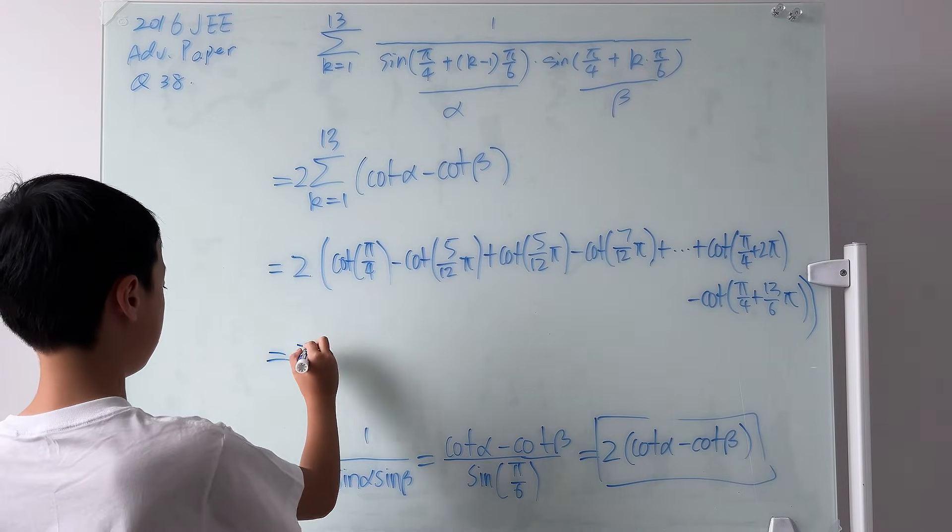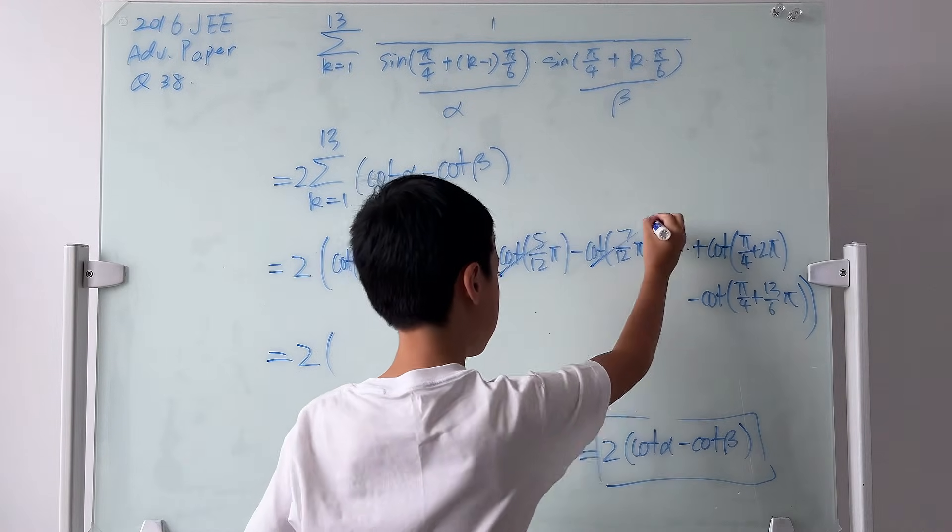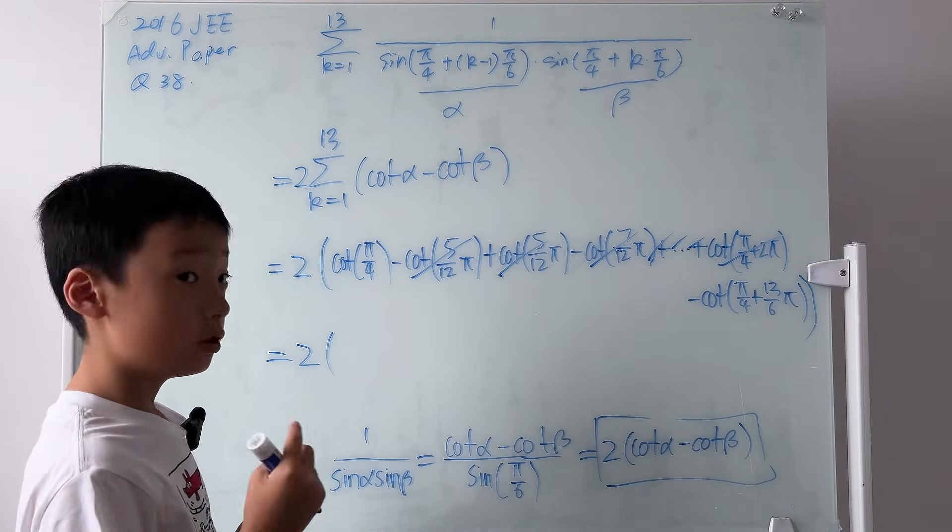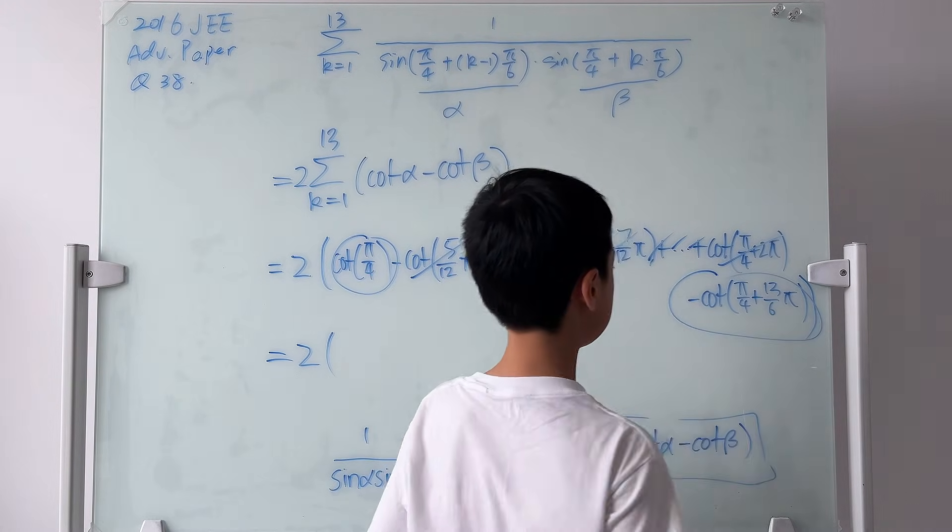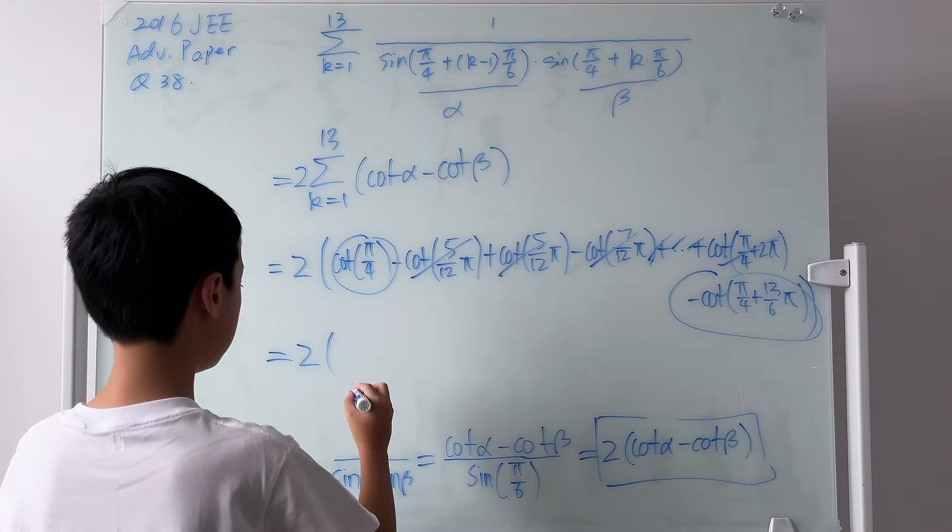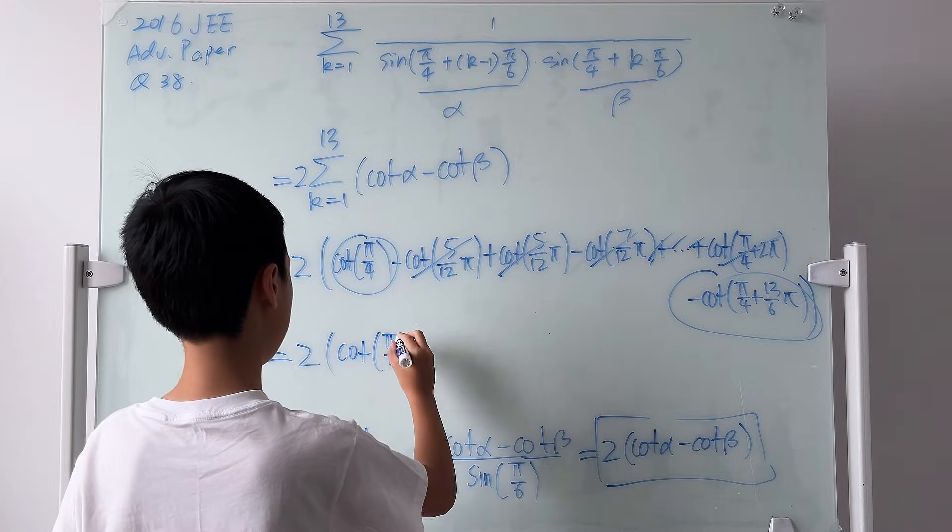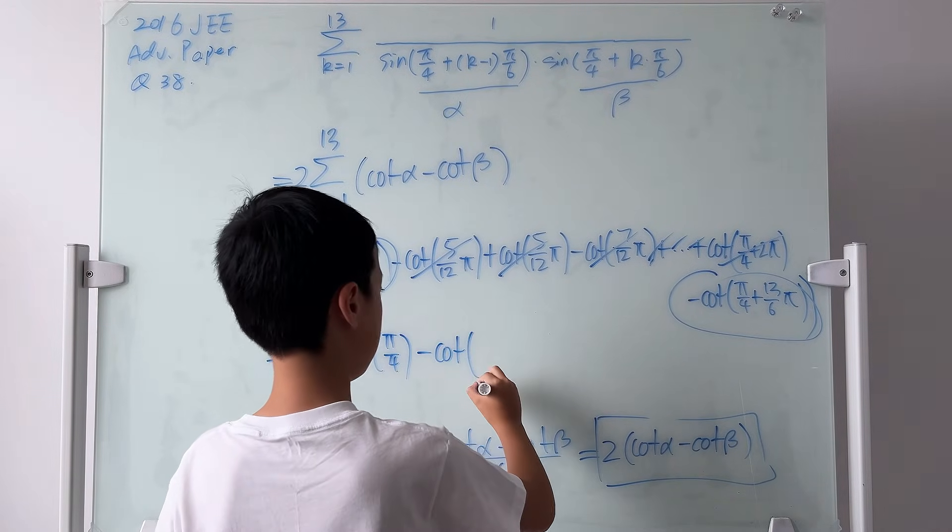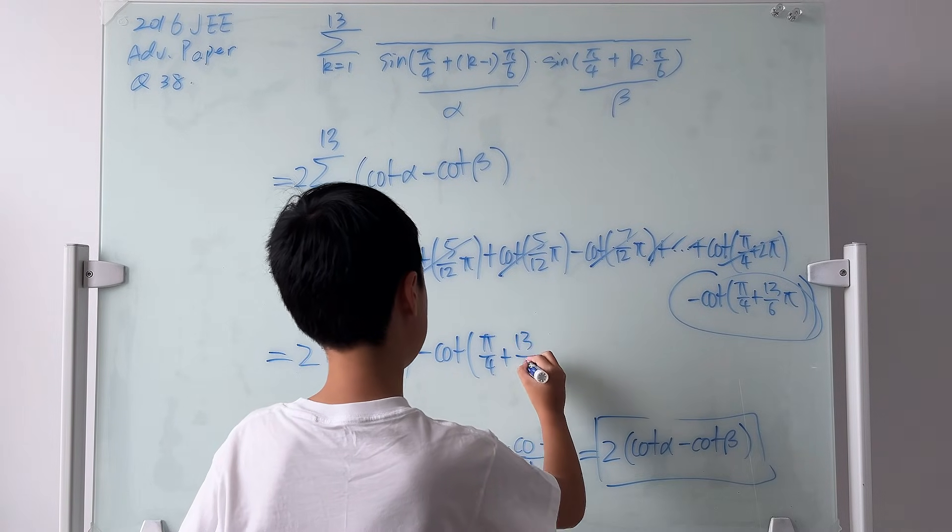And this is equal to 2 times, guess what? Cancel, cancel, cancel, cancel, all the way to here. So, the 2 times left is the first and the last. So we have cotangent of pi over 4 minus cotangent of pi over 4 plus 13 over 6 pi.